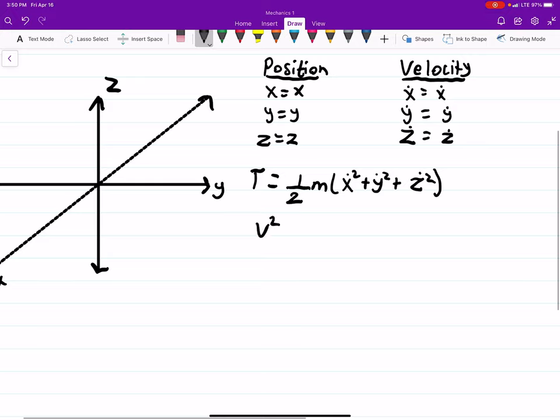So our V-squared, you could think V is equal to the square root of X-dot-squared plus Y-dot-squared plus Z-dot-squared. So then if you square both sides, you're left with this stuff.